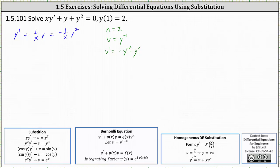Now going back to the equation, now that we've identified n using the y squared on the right, let's divide through by y squared, or multiply both sides by y to the power of negative 2. This gives us y to the power of negative 2 times y prime plus 1 over x times y times y to the power of negative 2, giving us 1 over x times y to the power of negative 1, equals on the right negative 1 over x.